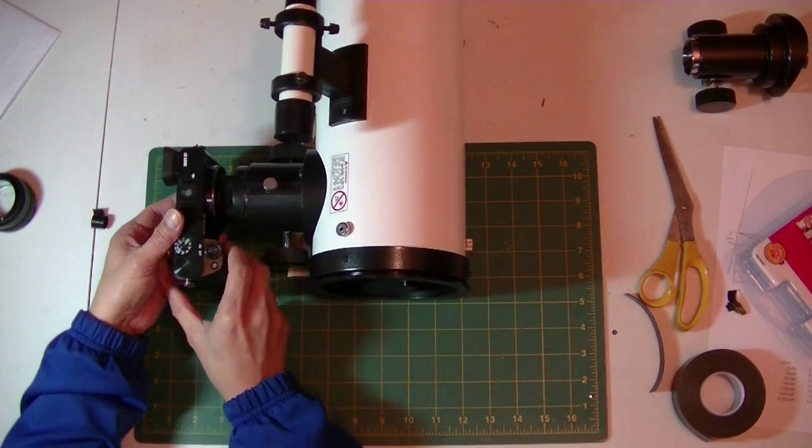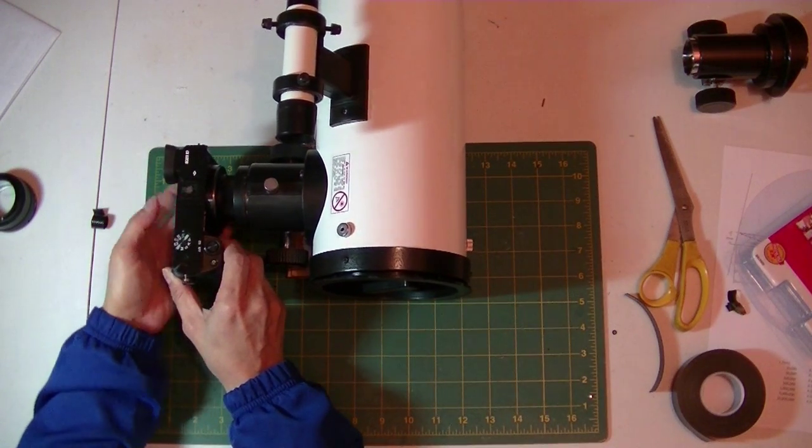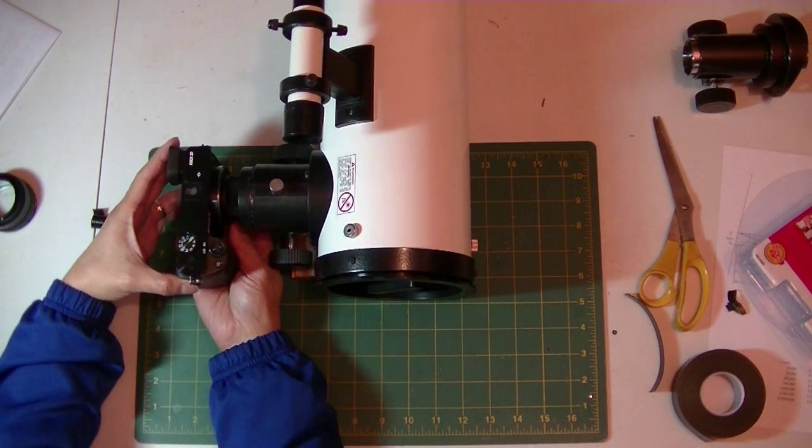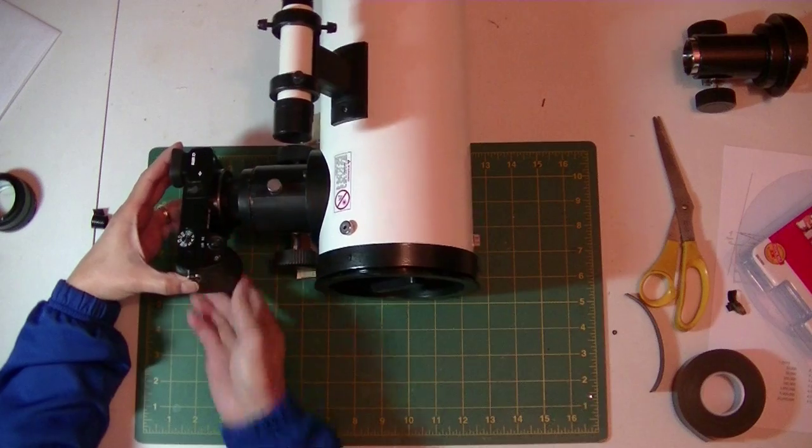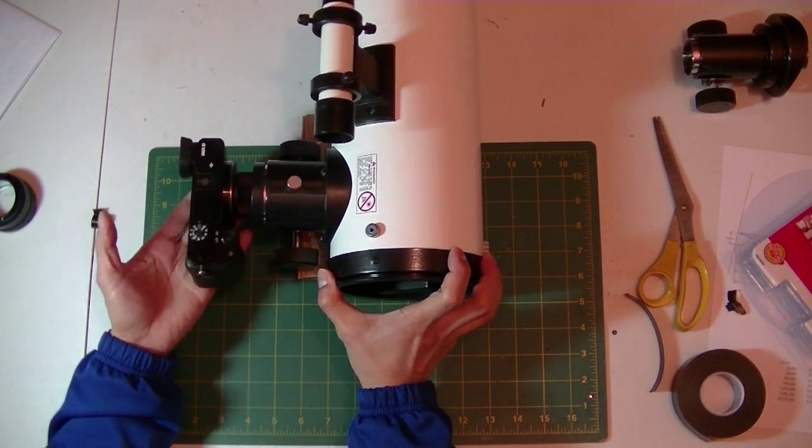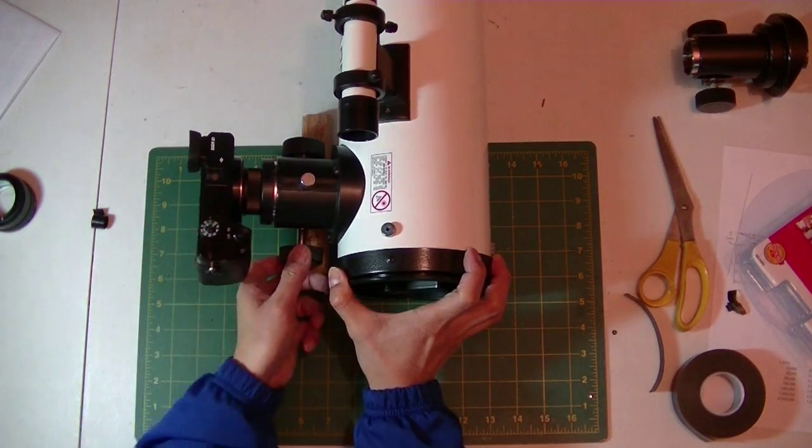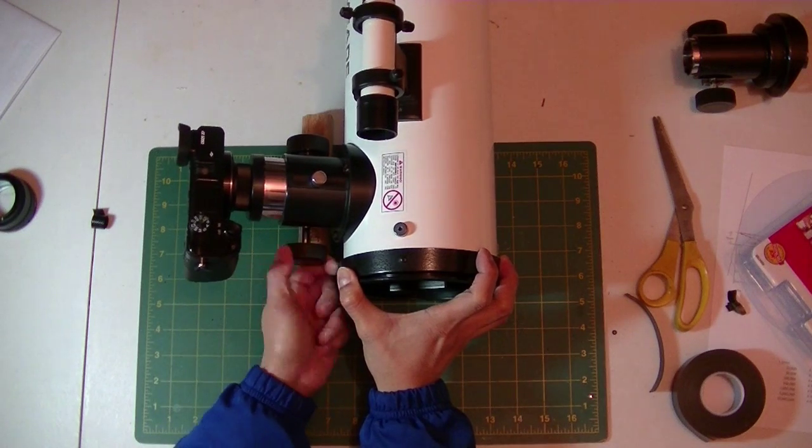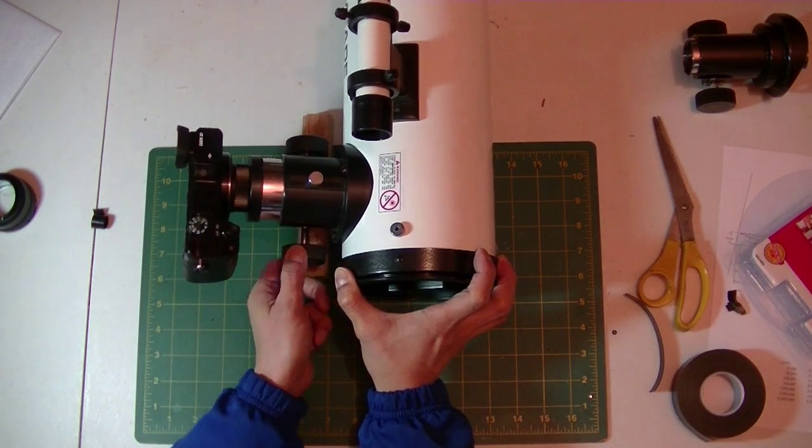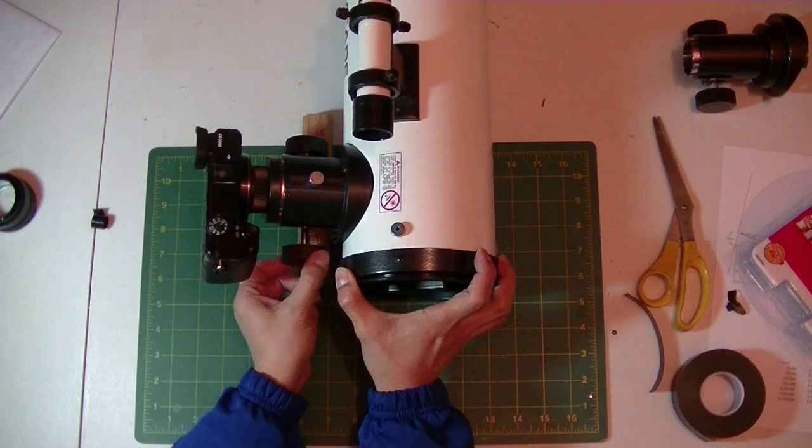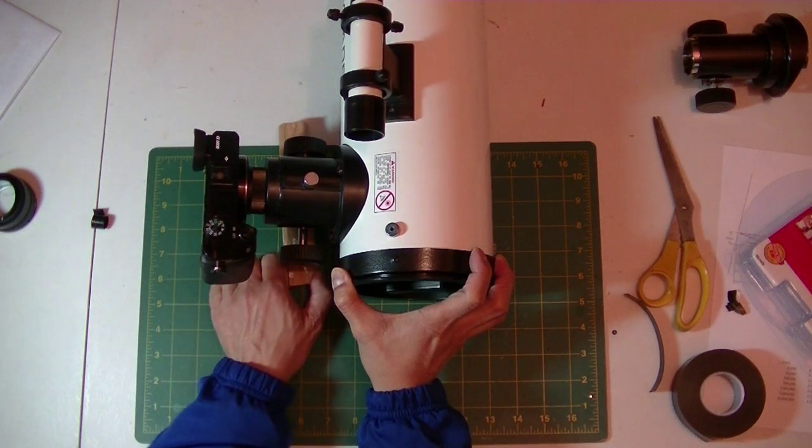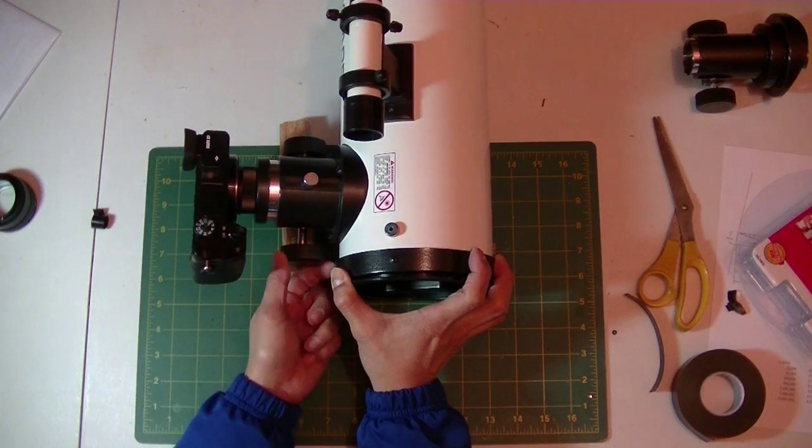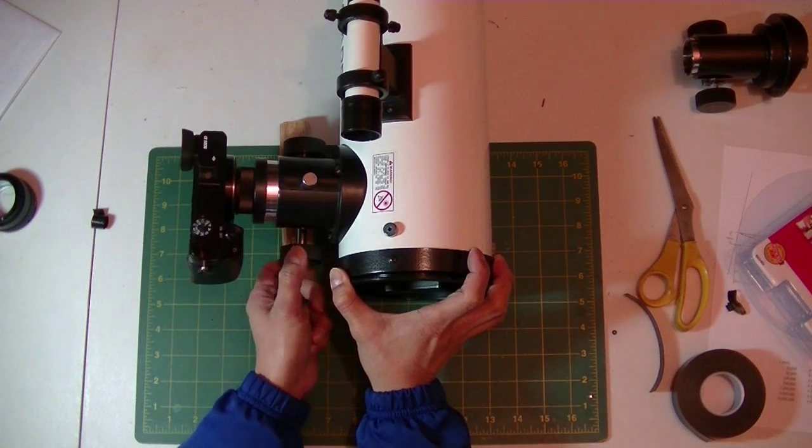Put it there and tighten the screw. The camera is securely mounted to the telescope and it works perfectly. Now I can take pictures of the stars, moon, and outer sky objects.